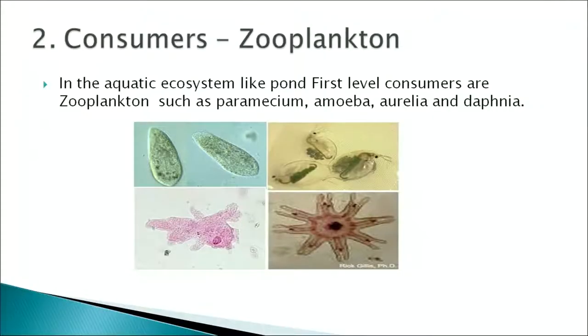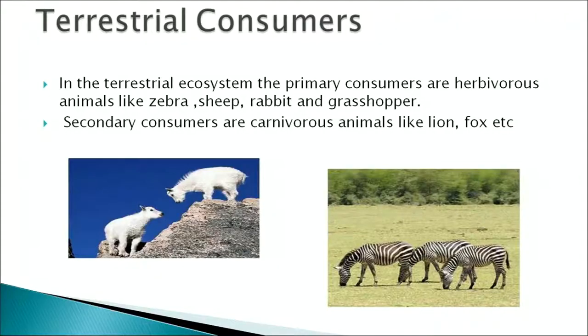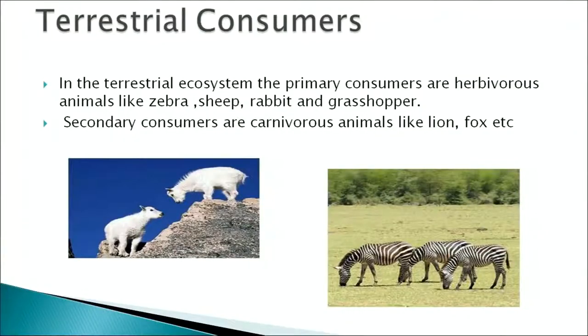The producers or autotrophs make food for the consumers. In an aquatic ecosystem the main consumers are zooplanktons, herbivores such as paramecium, amoeba, aurelia and daphnia. On the terrestrial ecosystem, the primary consumers are herbivorous animals such as zebra, sheep, rabbit and grasshoppers. The secondary consumers which depend upon these primary consumers are carnivorous animals such as lion, fox etc.